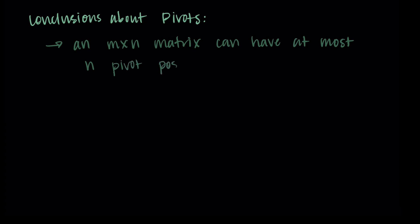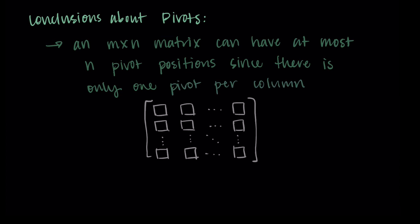Now I want to make some conclusions and comments about pivots. All of these things you could reason through on your own, but it's nice for us to just summarize them here. If we have an M by N matrix, where there are M rows and N columns, this can have at most N pivot positions. The reasoning here is that there can only be one pivot per column. We can have as many rows as we want, but we can only have enough pivots as there are columns.